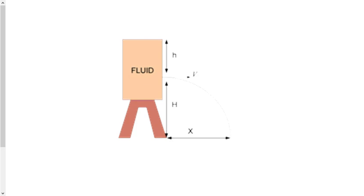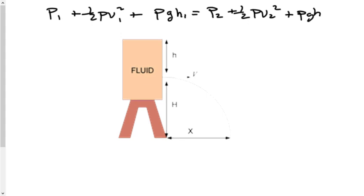So we have pressure one plus one-half rho v squared, let's label that as a one, plus rho g h1 equals pressure two plus one-half rho v2 squared plus rho g h2.